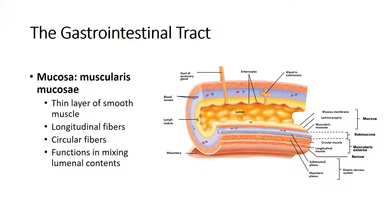The last layer of the mucosa is the muscularis mucosa, a thin layer of smooth muscle. There are two directions to the fibers in this layer: longitudinal fibers running up and down the length of the lumen, and circular fibers running around the lumen. This creates both horizontal and longitudinal contractions, allowing the mixing and mulching of contents within the GI lumen.